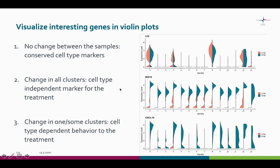We can see the same three scenarios in the violin plots. On the x-axis we see the different clusters, and for each of these three genes we see the expression level in control (red) and treated (green). The conserved markers show somewhat similar expression in both samples. This gene here is affected by the treatment regardless of cell type, so we see a strong difference between the samples. In the last plot we can see that some clusters or cell types are reacting to the treatment and others are not.